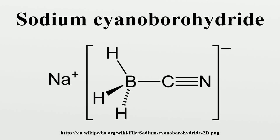Structure and preparation: The tetrahedral anion BH3CN⁻ comprises the salt. The reagent is invariably purchased, although it can be prepared easily. One method involves combining sodium cyanide and borane. Another route entails treating sodium borohydride with mercury cyanide. Commercial samples can be purified, but the yields of the reductive aminations do not improve.